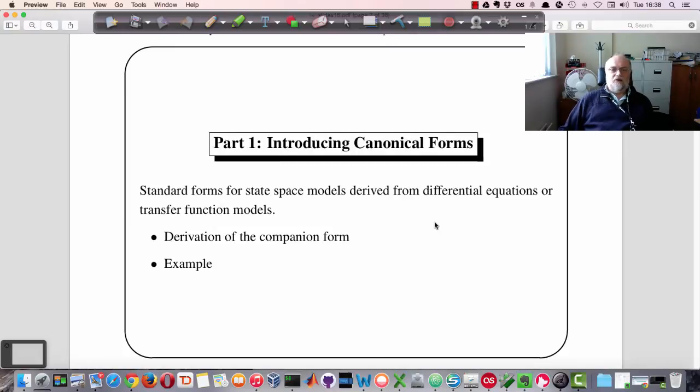But in this particular Part 1 I wanted to introduce you to the idea of Canonical Form by looking at what's called the Companion Form. The particular form that we're going to be looking at today is called the Companion Form. And so I'll go through the derivation of that and then we'll have an example. And then in the class we'll actually work through the mathematics on the board so that you can get a feel for how these things work.